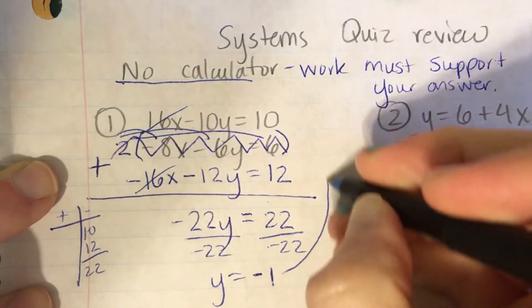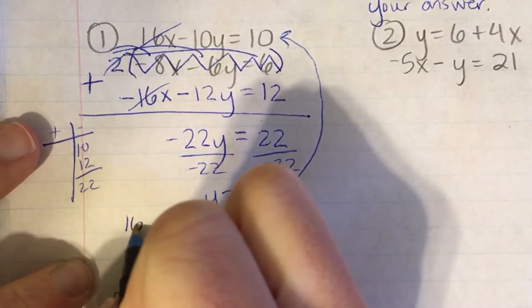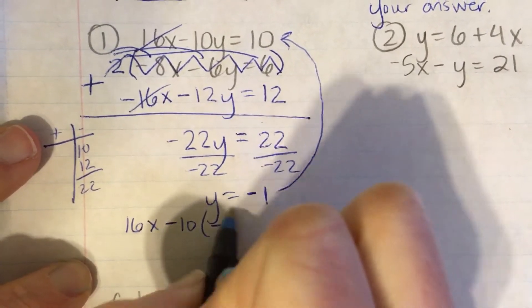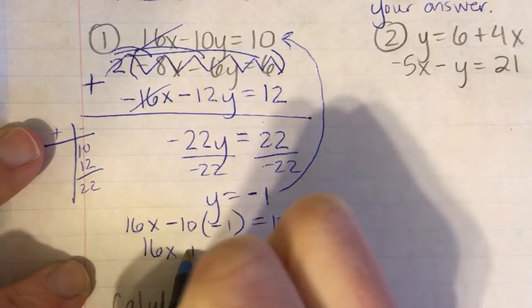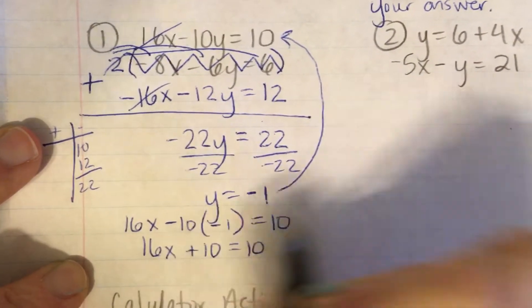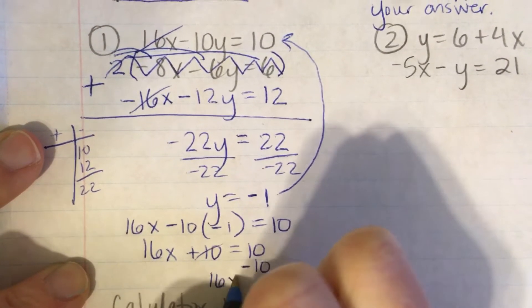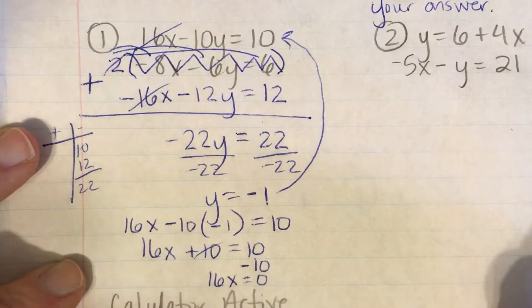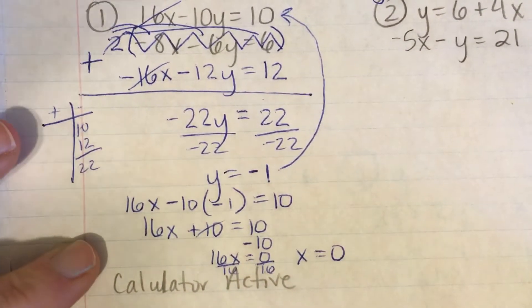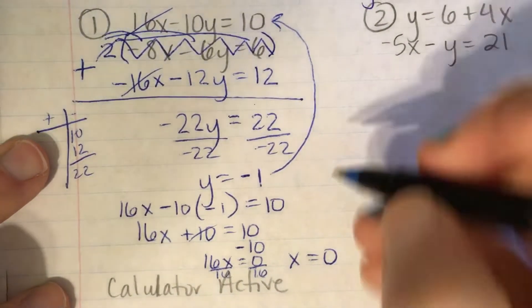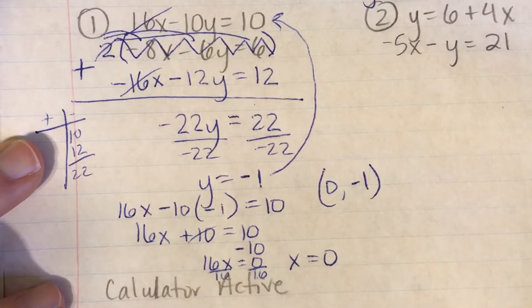Don't forget to go back and plug in your answer so that you can find x. So I have 16x minus 10 times negative 1 equals 10. 16x plus 10 equals 10. Subtract 10. 16x equals 0. And then you divide by 16. X equals 0. That's okay. X can equal 0. Y can equal 0. That's okay. So my answer is 0, negative 1.